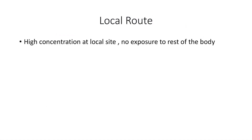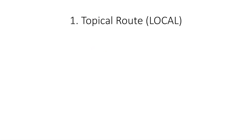As the name suggests, local route means a higher concentration of drug goes at the local site. That is the first and foremost thing — the higher concentration of drug goes at the local site, and there would be no exposure to the rest of the body. So systemic exposure would be little or none.